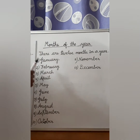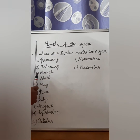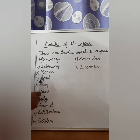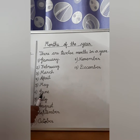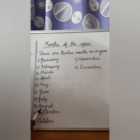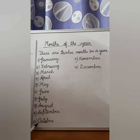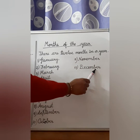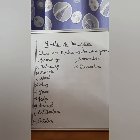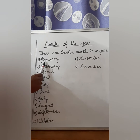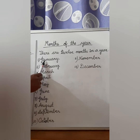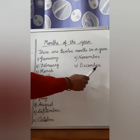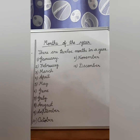Once again, I'm going to repeat: January, February, March, April, May, June, July, August, September, October, November and December. And January is the first month of the year and December is the last month of the year.